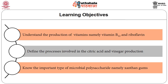After completing this module, the learner will be able to understand the production of vitamins namely vitamin B12 and riboflavin, and also to define the processes involved in citric acid and vinegar production, and also to know the important type of microbial polysaccharide, namely xanthan gum.